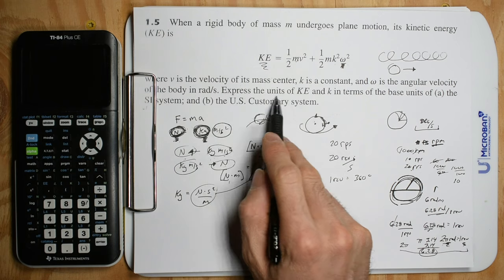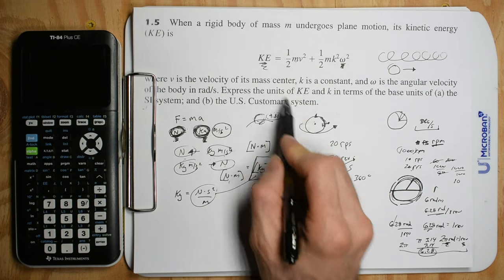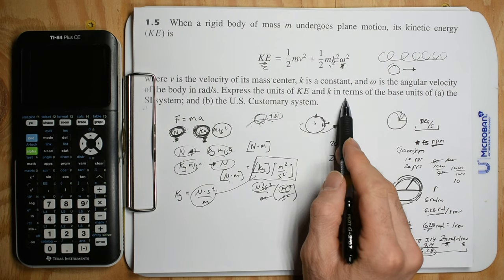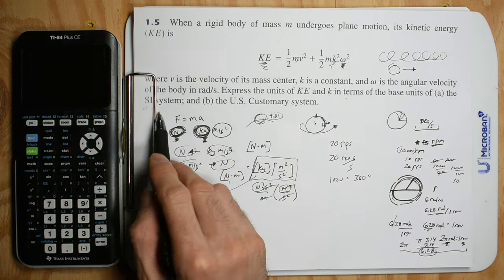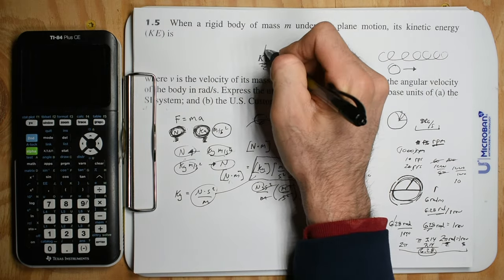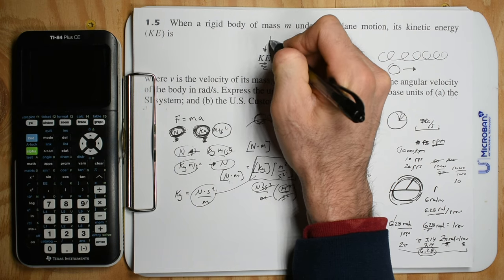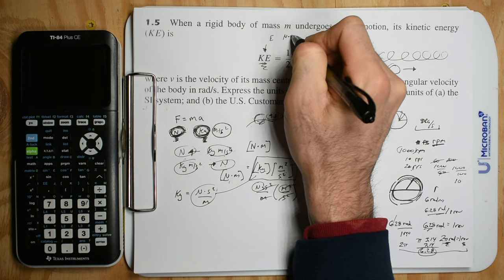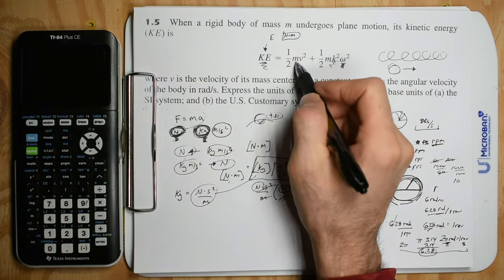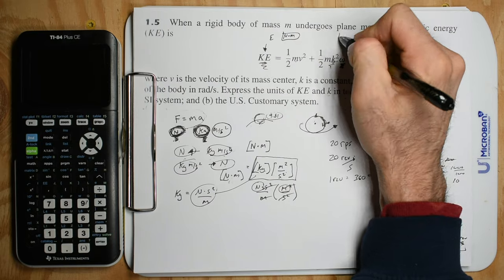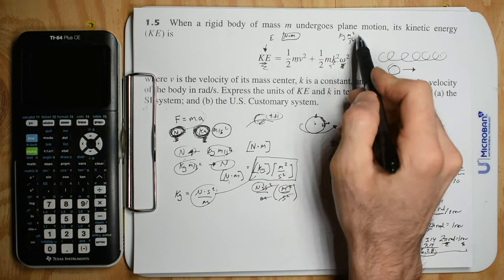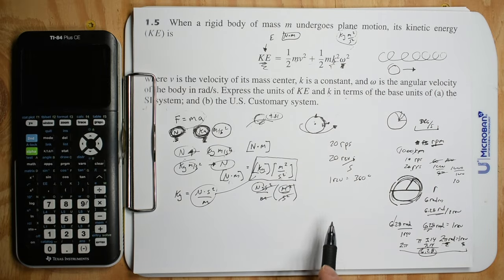Because the problem says to express the units of kinetic energy in terms of the base units of the SI system and the US customary system. You need to know that the base units of kinetic energy — or energy in general — is Newton meters. To get there, you have to use F equals MA, because otherwise you'd just have kilograms times meters squared over seconds squared and not know what to do.